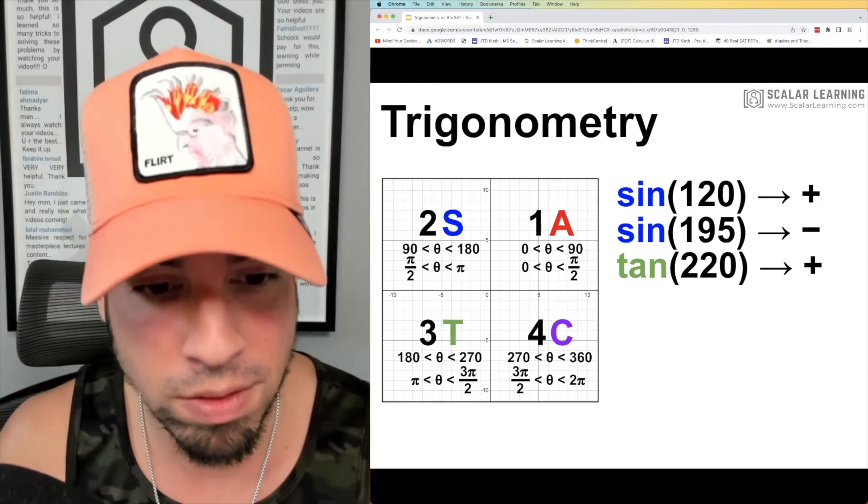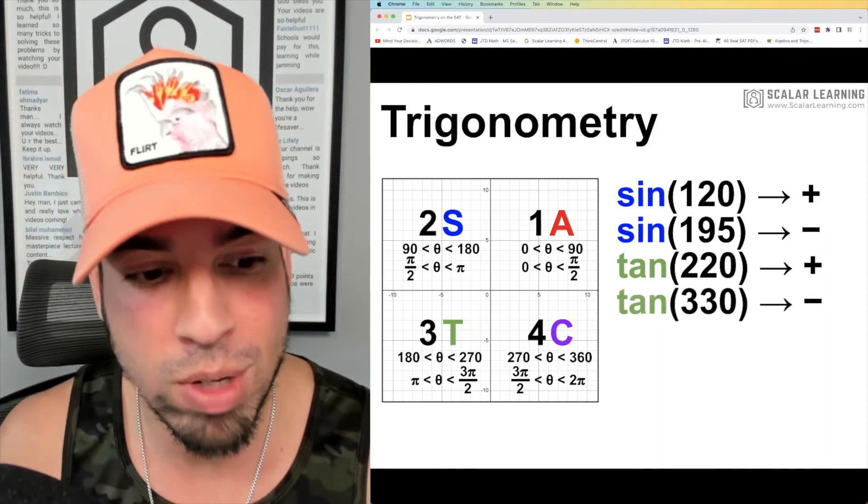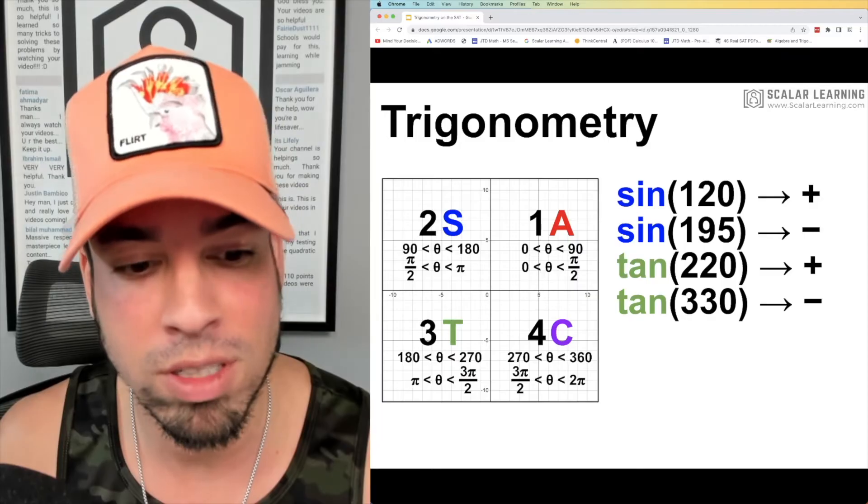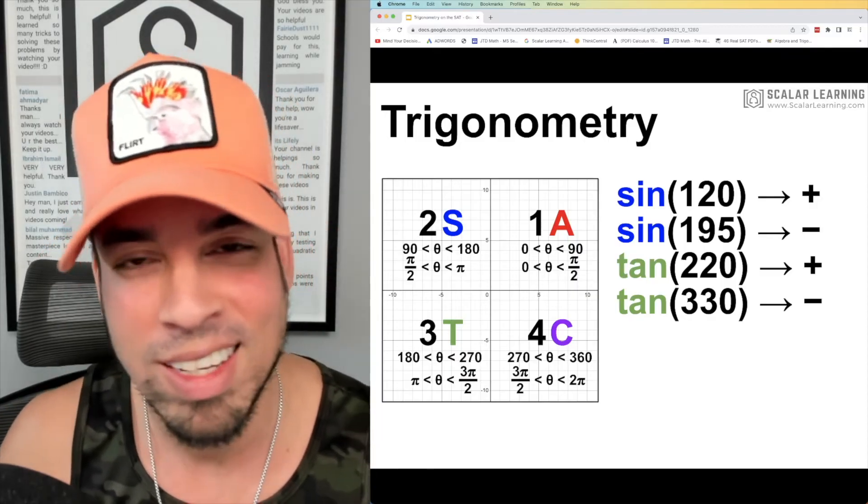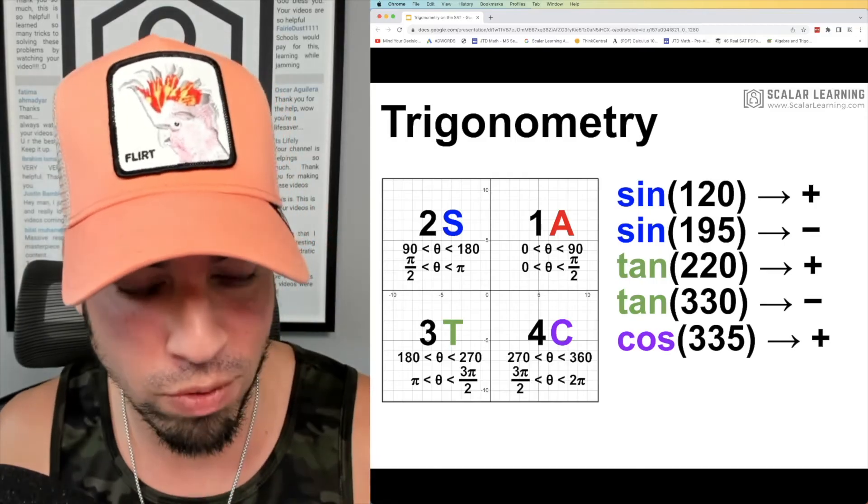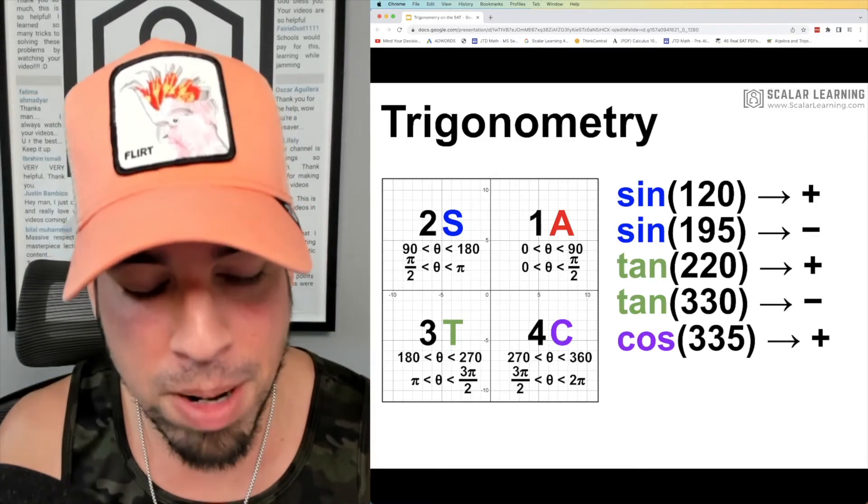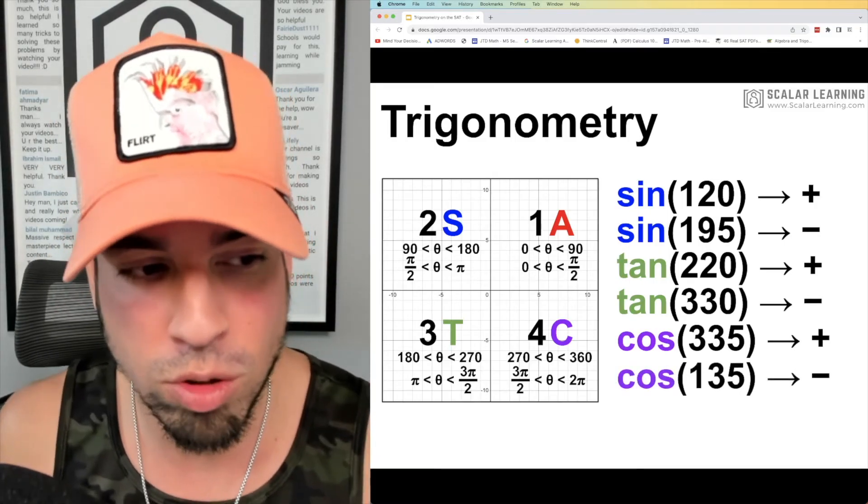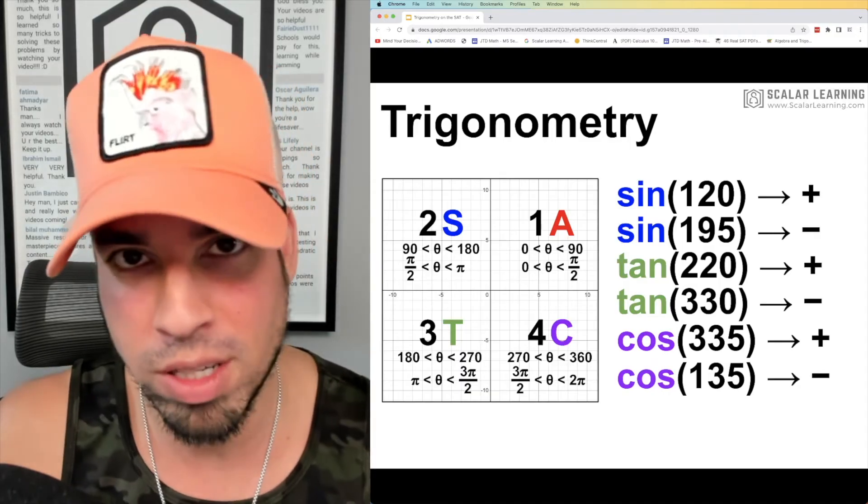If we had tangent of 220, that's going to be positive because it's in quadrant three and tangent is positive in quadrant three. Tangent of 330 is going to be negative because now we're talking about quadrant four where tangent is not positive, it's negative. Cosine of 335—that's going to be quadrant four, that's where cosine is indeed positive. And last but not least, cosine of 135—in quadrant two, cosine there is going to be negative.